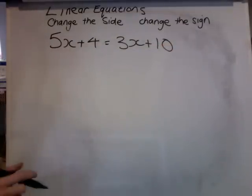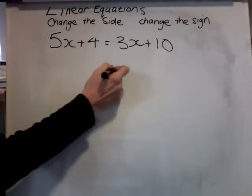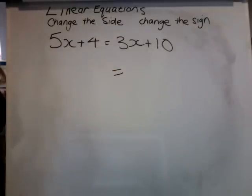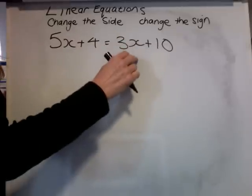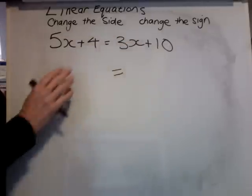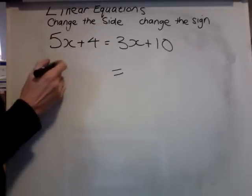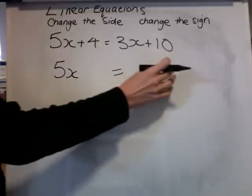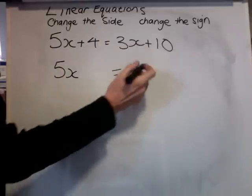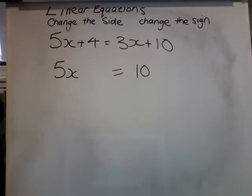So let's have a look at it. Which side shall we put our X's on? Which side has most X's? I've got 5X's on this side, 3X's on that side. This side has most X's, so those X's can stay there. The numbers are going to be over here, so the 10 can stay where it is.